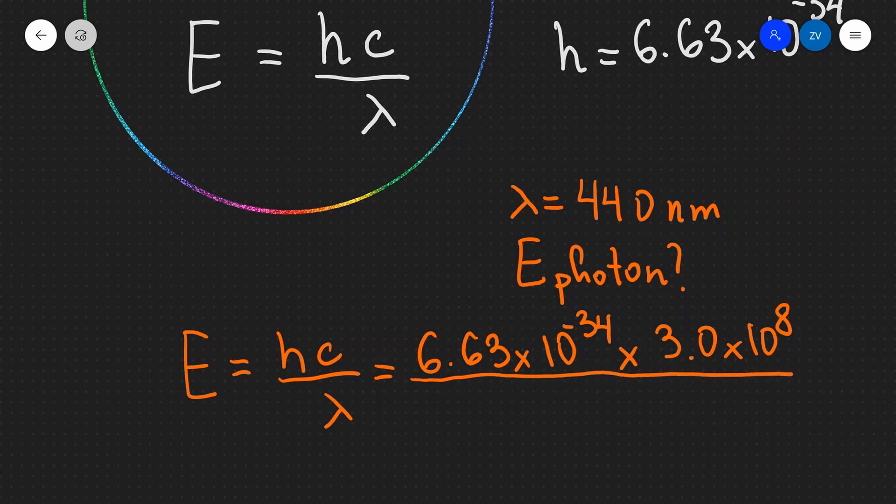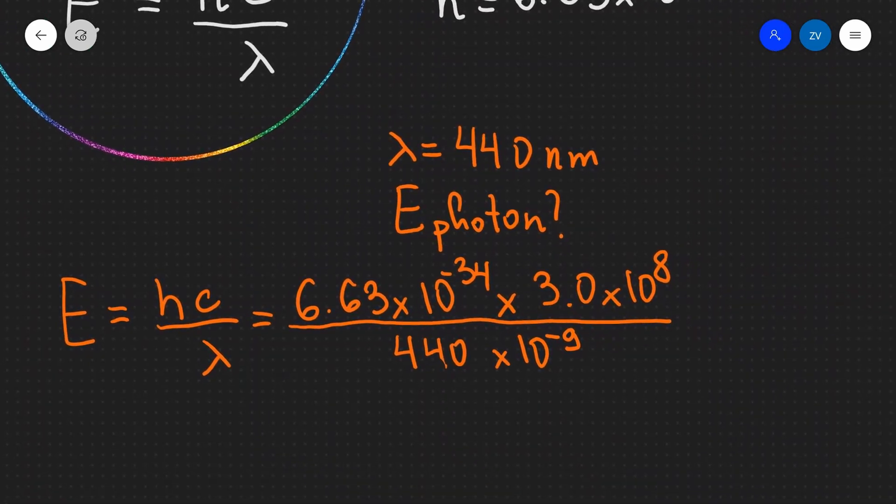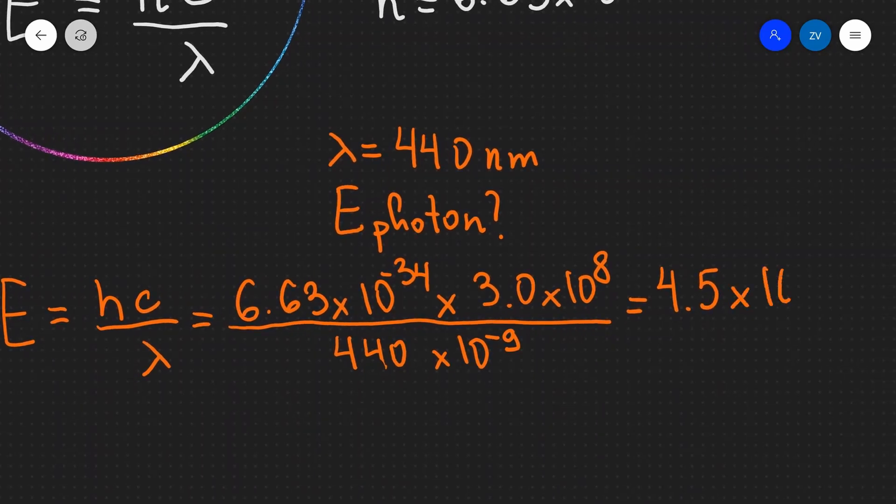And what I'm going to do is divide that by the wavelength, which is 440 times 10 to the power of minus 9. Remember, nano stands for 10 to the power of minus 9.